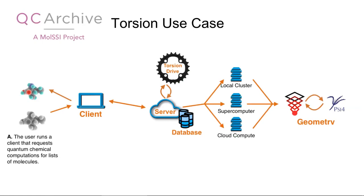QC Archive is much more low-level than everything discussed so far. The question is not how I do one torsion drive, but how do I do thousands to hundreds of thousands? How do we marshal tens of millions of CPU hours and make sure we never repeat those CPU hours across this project?